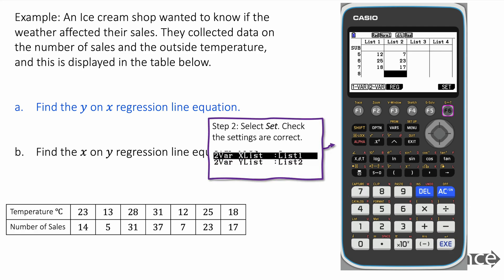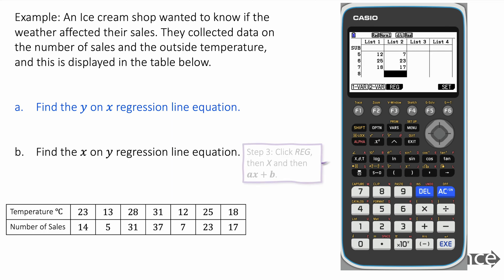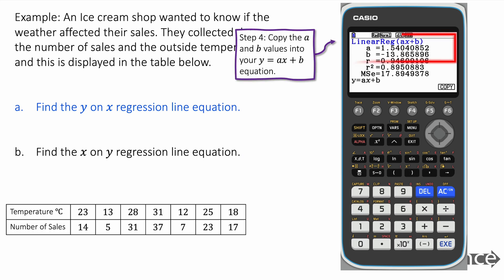Then we go to settings. I'm going to check that we've set it like this where the x list is list one and the y list is list two. Press exit and we go to regression x and we're going to go to ax plus b here and this gives us our values of regression where a is the gradient 1.54 and b is minus 13.86 and we put that into our y equals mx plus c or y equals ax plus b equation and that's it. That's how you find the regression line there.